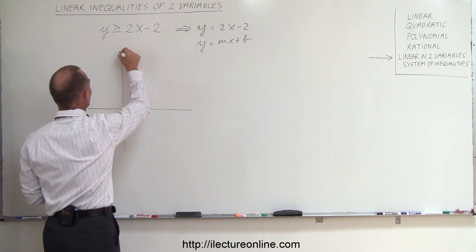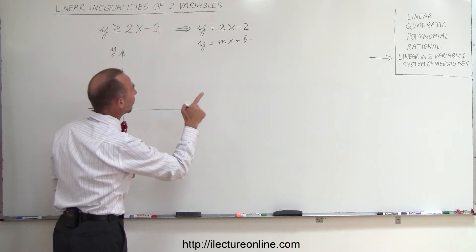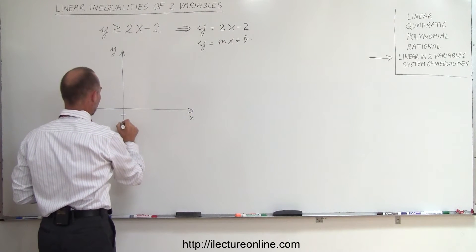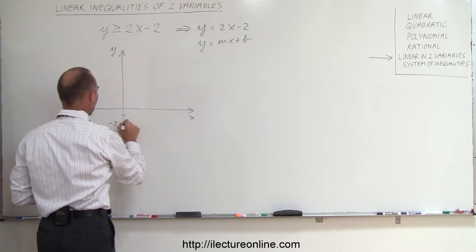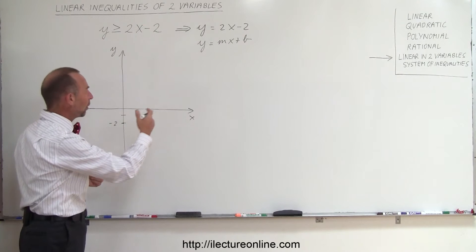So in this case, let me draw the y here, and here we have the x. And so we know that the intercept is at minus 2. So minus 1, minus 2. So the intercept is right there, and the slope is 2.